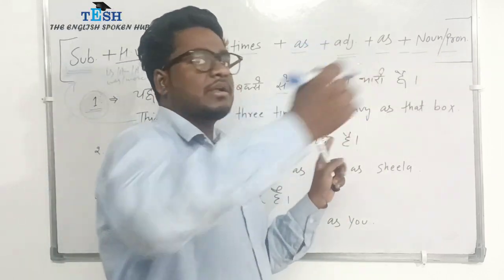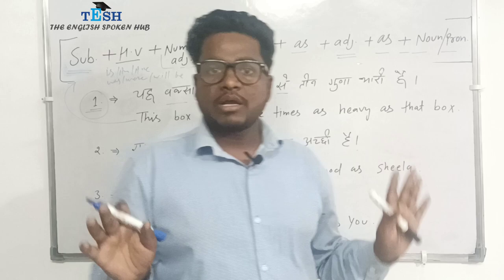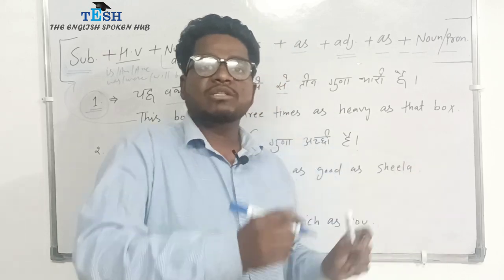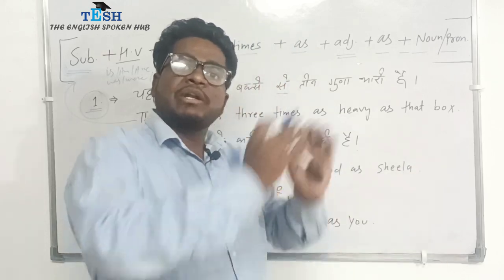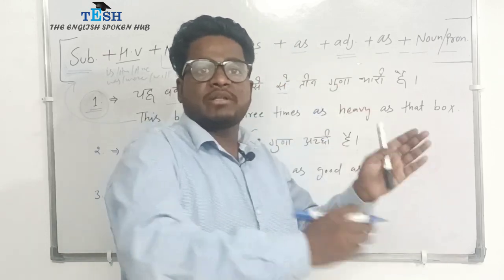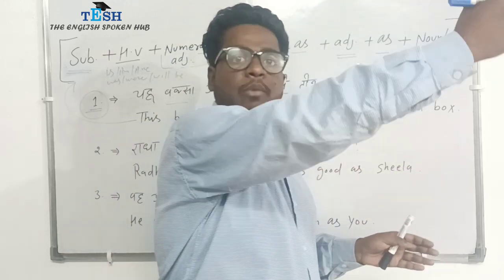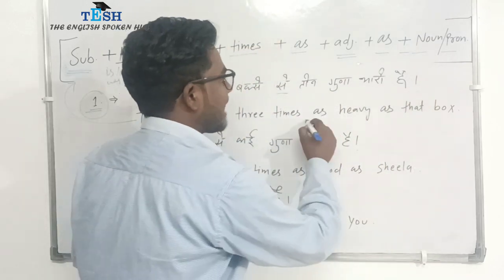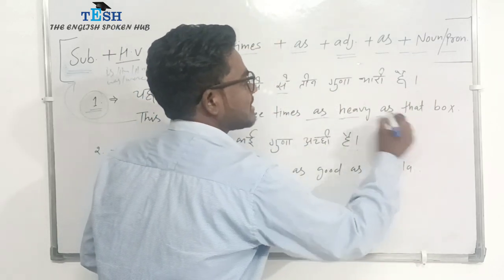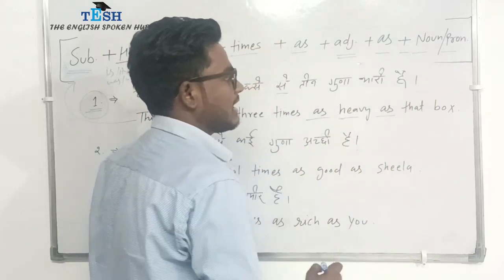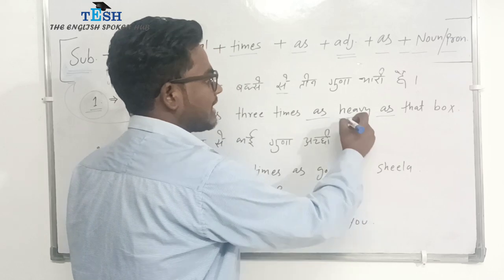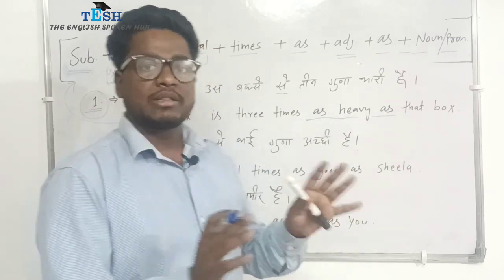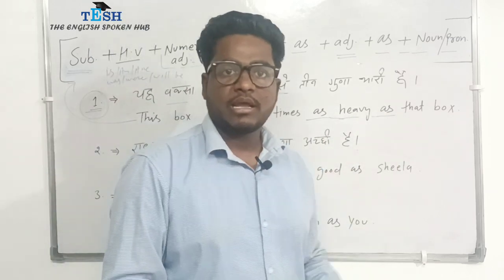You might be tempted to say 'this box is three times heavier than that box' — but that would be incorrect. That is why I used 'as heavy as'. To show comparison using this structure, do not make that mistake. Use 'as + adjective + as' rather than the comparative form.